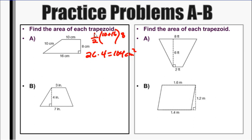The bottom one, letter B, I have half times the base three plus seven times the height of four. Half of four is two. Three plus seven is ten. So two times ten would give us twenty square inches.